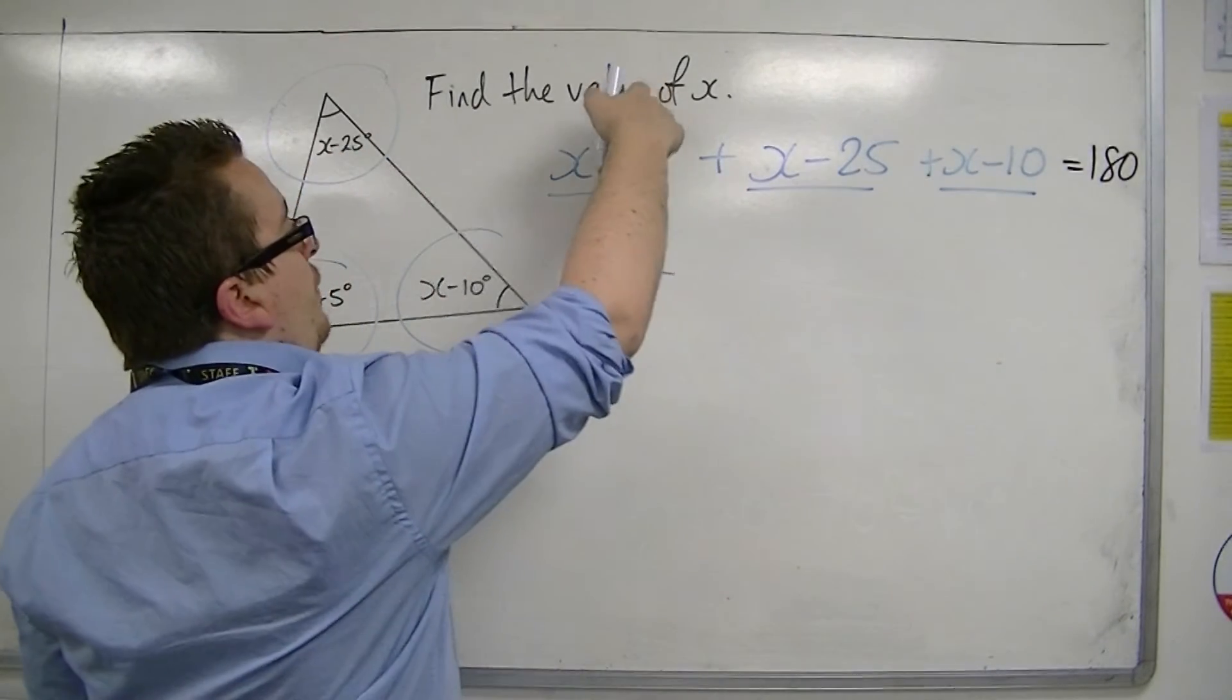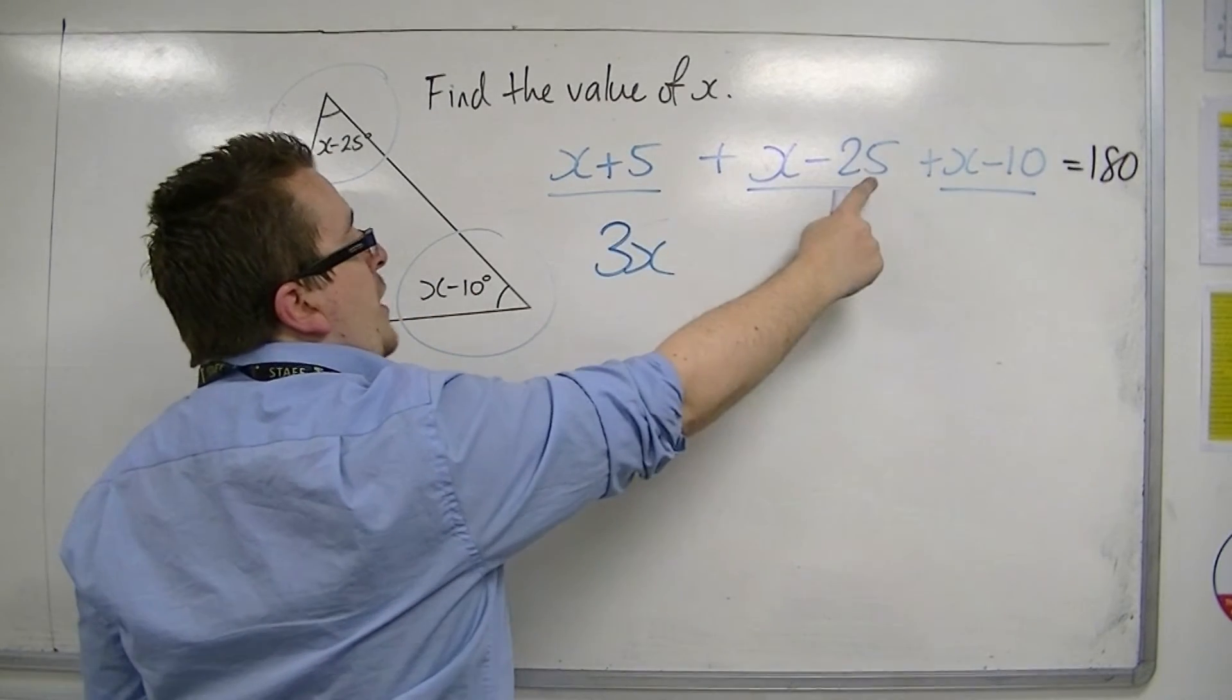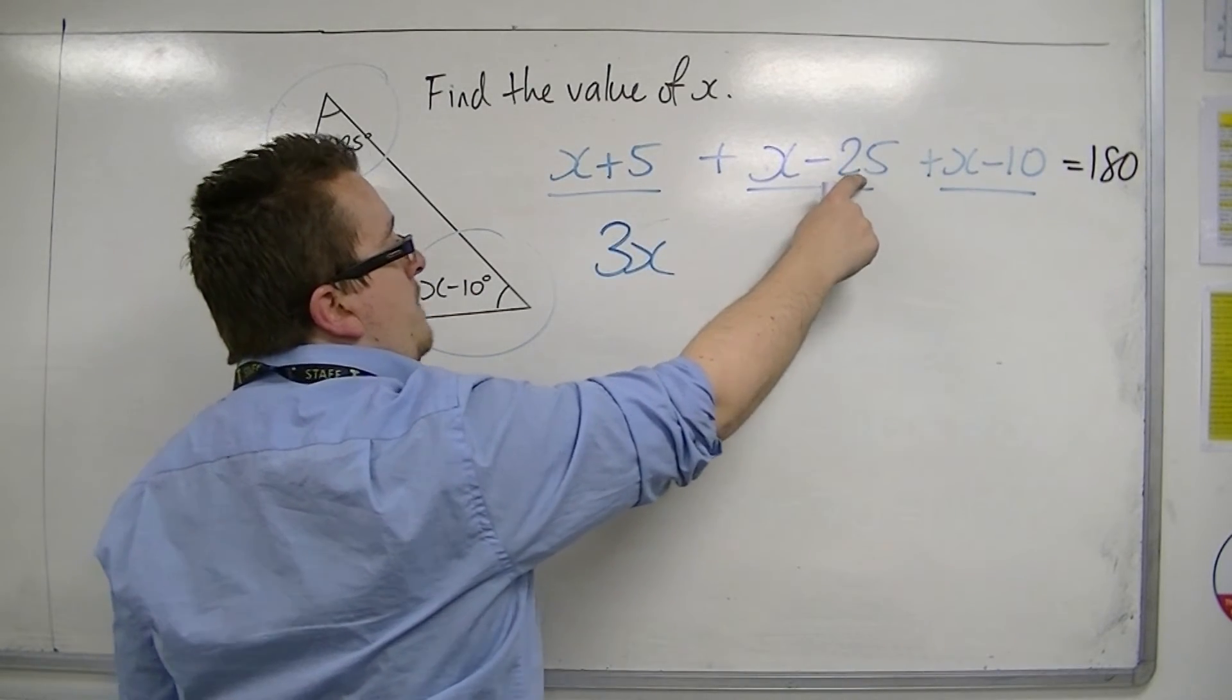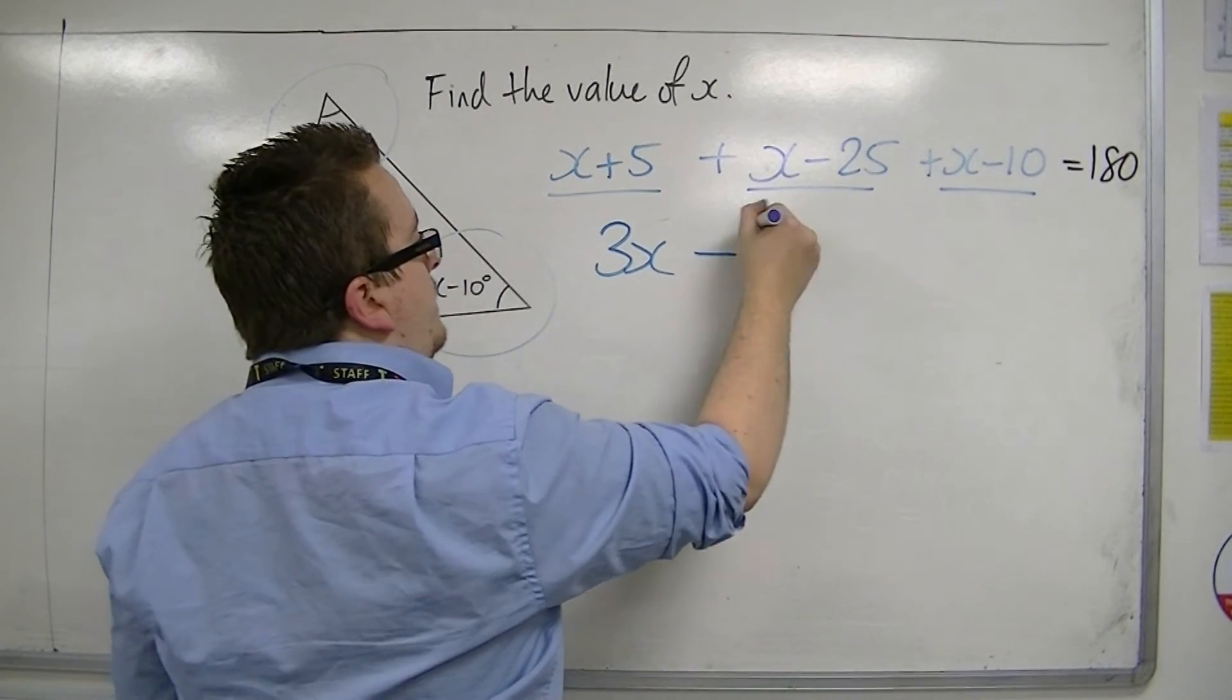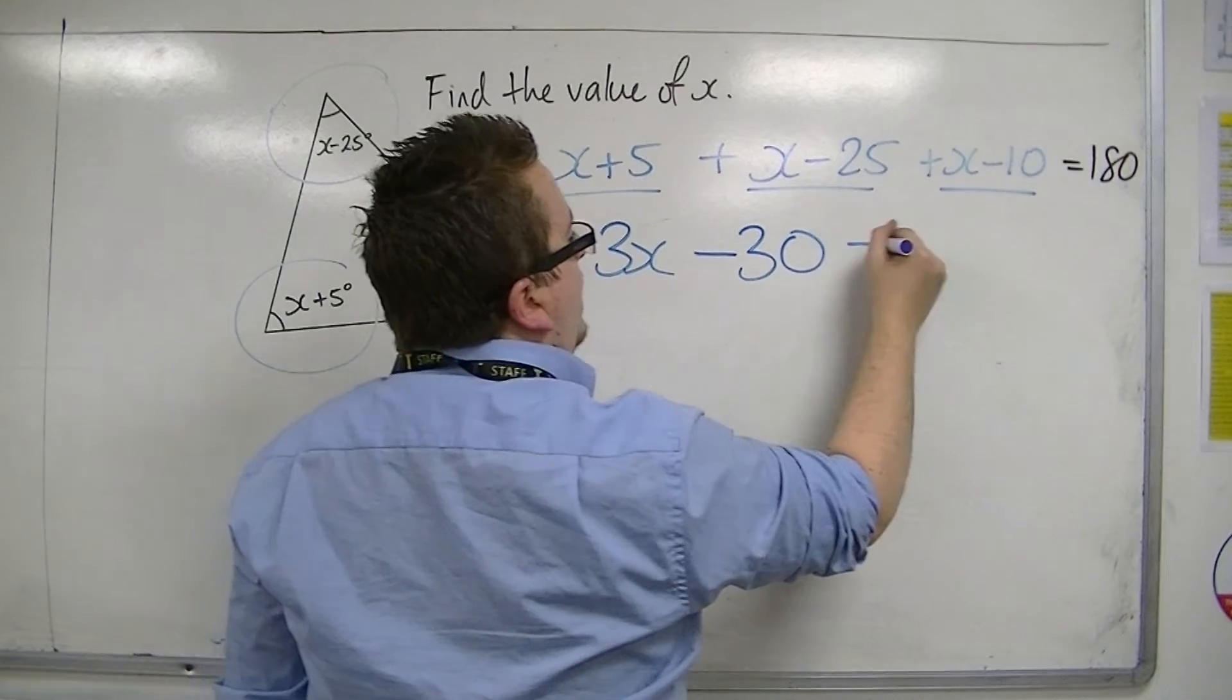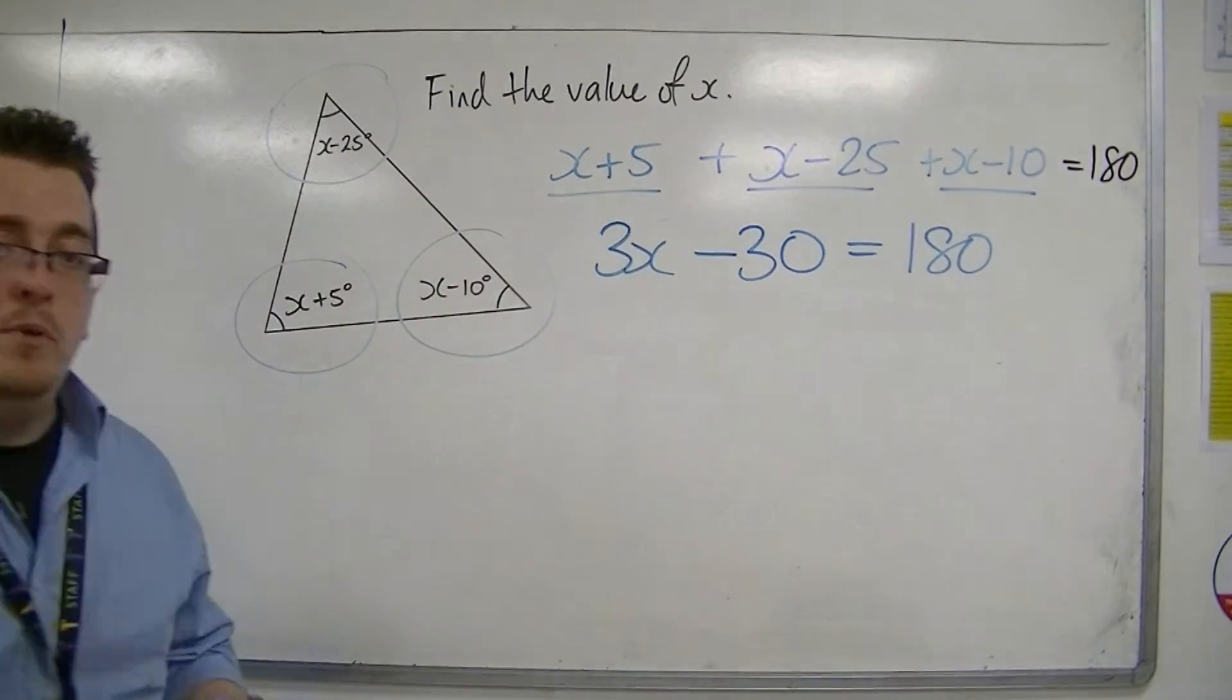And I've got 5 take away 25, so 5 take away 25 is minus 20, take away another 10 is minus 30, and that's got to be equal to 180. Okay, so we've simplified it down. We've collected like terms.